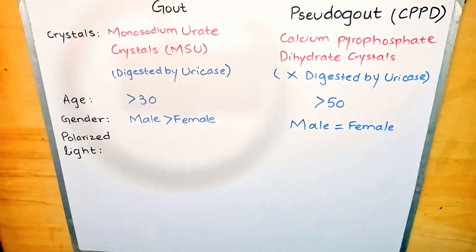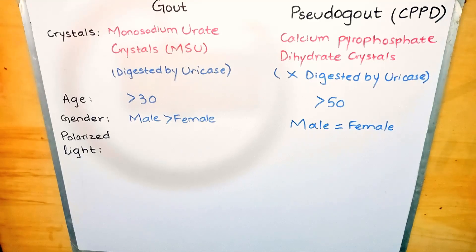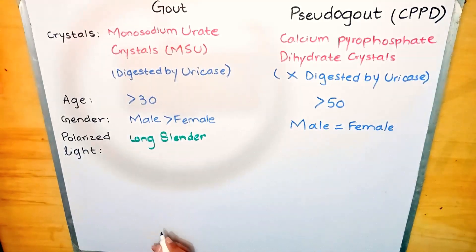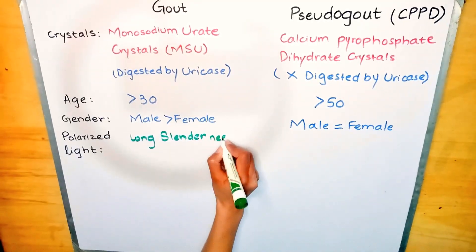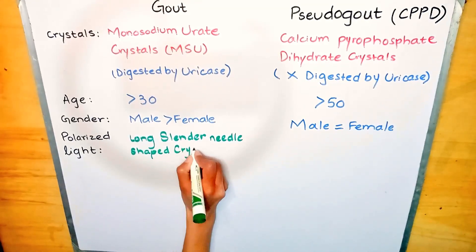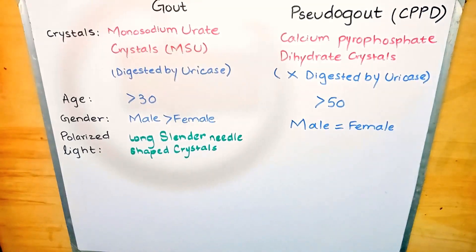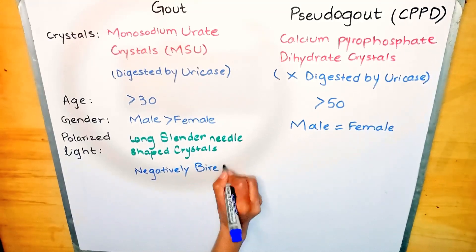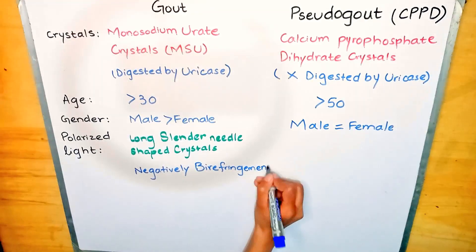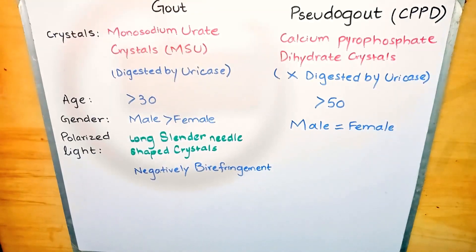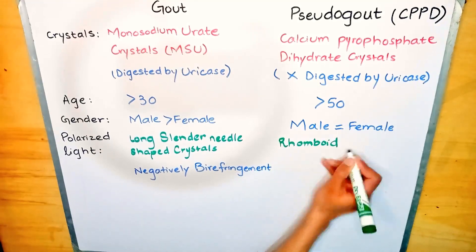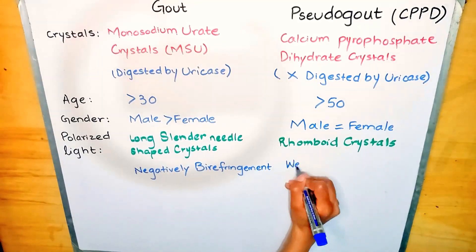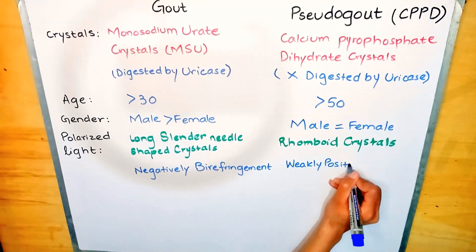Looking at the appearance of crystals under polarized light: in gout, the crystals appear long, cylinder and needle-shaped, and are negatively birefringent. In pseudo gout, the crystals appear rhomboid-shaped and are weakly positively birefringent.